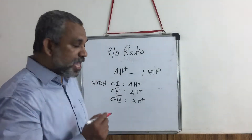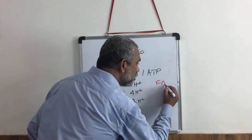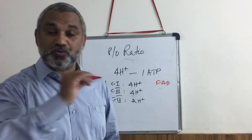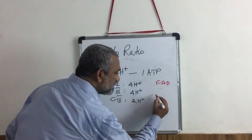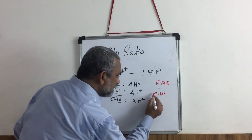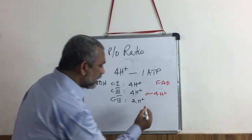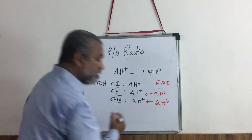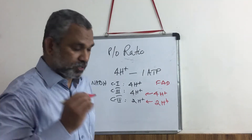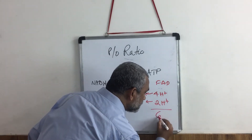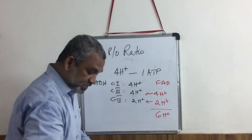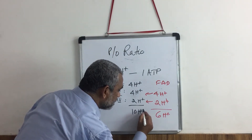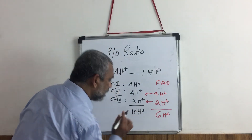In the case of an FADH2, remember FAD will enter only at complex number 2, so therefore it will transfer 4H+ at complex number 3, and 2H+ at complex number 4. So therefore, a total of 6H+ for FADH2, whereas for NADH it is a total of 10H+.